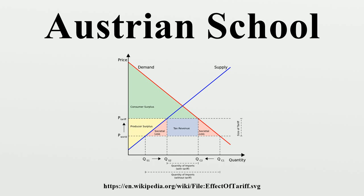Among the theoretical contributions of the early years of the Austrian school are the subjective theory of value, marginalism in price theory, and the formulation of the economic calculation problem.